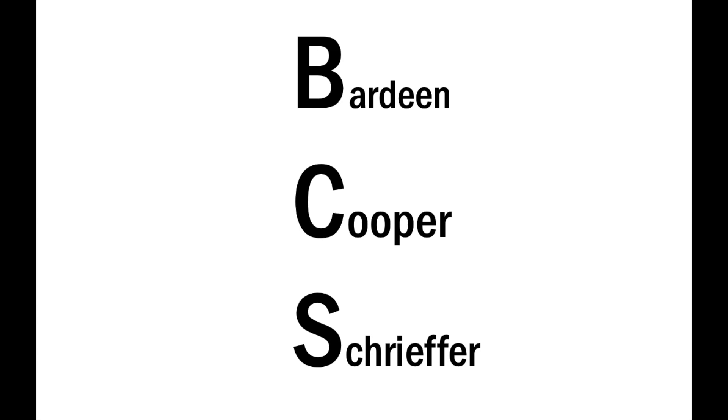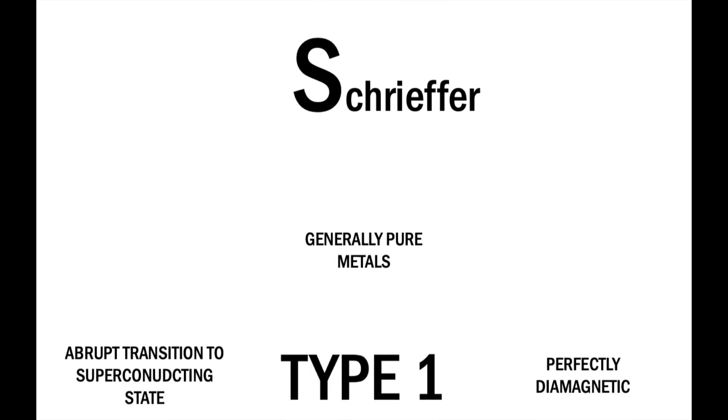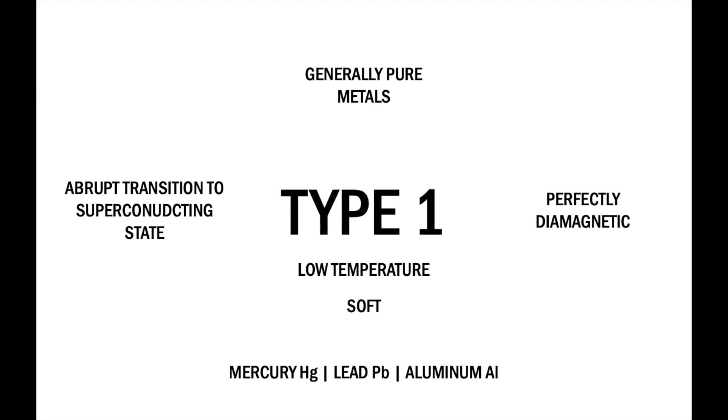However, this theory only explains why type one superconductors work. Yes, there are two types of superconductors. You have your type one superconductors with relatively low critical temperatures. They are generally pure metals, so some examples would be mercury and lead. Additionally, their transitioning state is more abrupt.